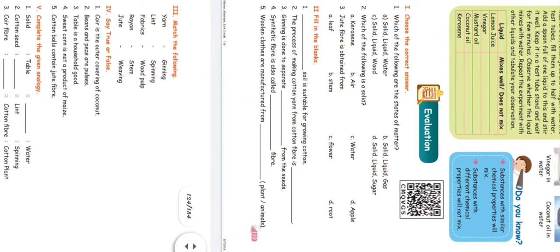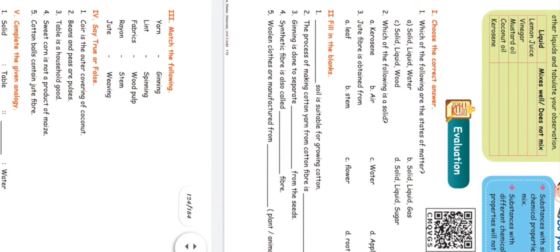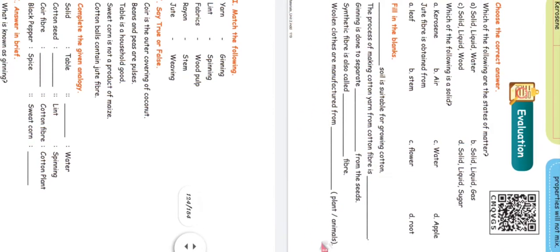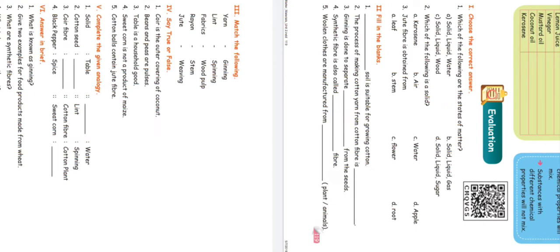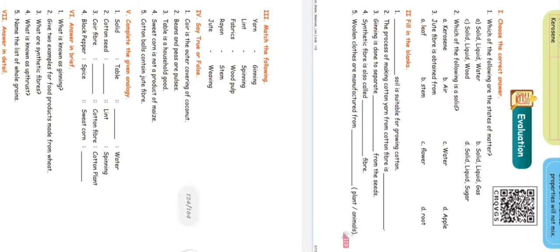Book back answers — choose the correct answer. First question: Which of the following are the states of matter? Answer: solid, liquid, gas — B is the right answer. Second question: Which of the following is solid? Answer: apple is solid. Third question: Jute fiber is obtained from — the stem — B is the right answer.